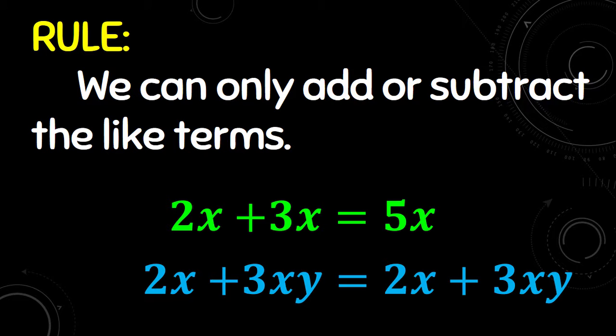We only have one rule in adding or subtracting polynomials. We can only add or subtract the like terms, just like 2x plus 3x equals 5x. Another example: 2x plus 3xy is equal to 2x plus 3xy.